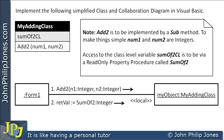Let's consider this simplified and somewhat contrived problem. We've been asked to implement the following simplified class and collaboration diagram in Visual Basic. Looking at the class diagram, I've given it the name 'my adding class', and within this class there is a class-level variable called 'sum of two CL'. The 'CL' is something I use to remind myself that I'm dealing with a class-level variable, and for this problem we're going to make this an integer.